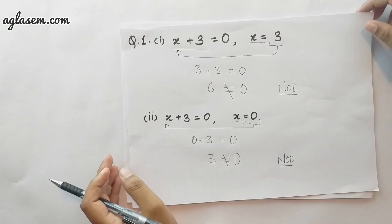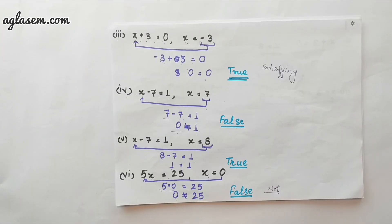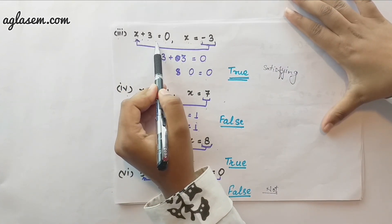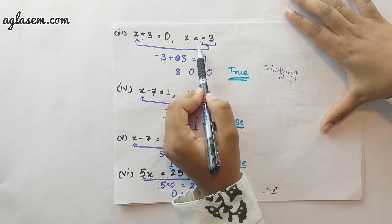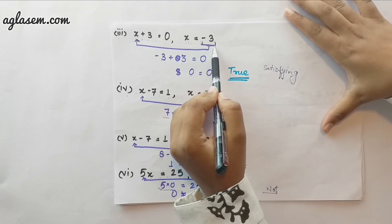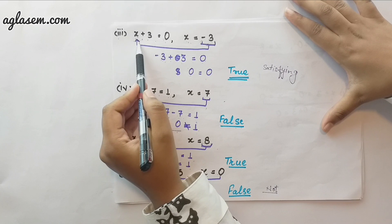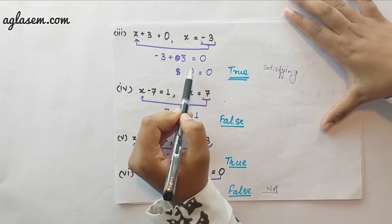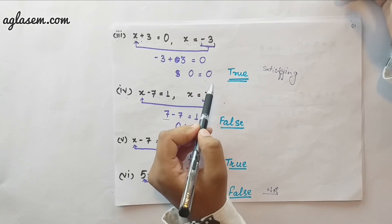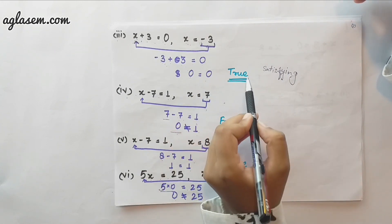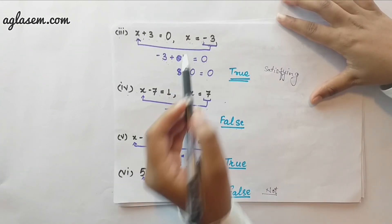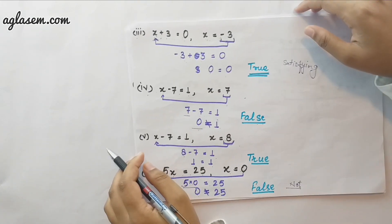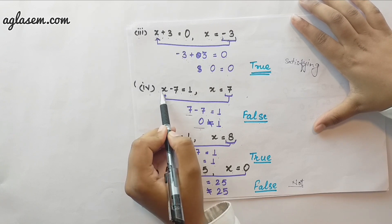In the third question, we have the equation x plus 3 equals to 0, and the value of x is minus 3. We put the value into the equation: minus 3 plus 3 equals to 0. 0 is equal to 0, hence the value of x satisfies the equation.